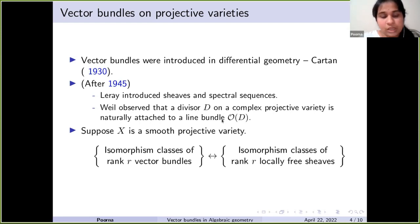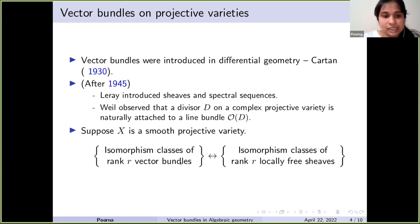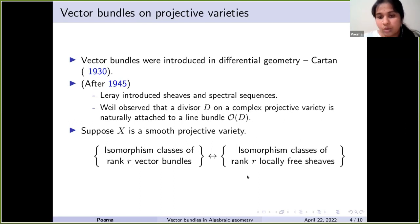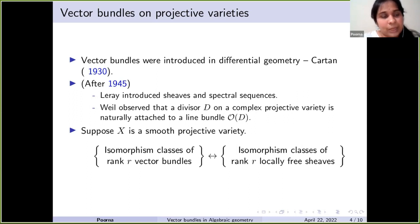It was also observed that if X is a smooth projective variety, there is a correspondence between isomorphism classes of rank r vector bundles and isomorphism classes of rank r locally free sheaves. So the dictionary between algebra and geometry became easier to use, and people became interested in studying vector bundles not just as tools but as geometric objects themselves.